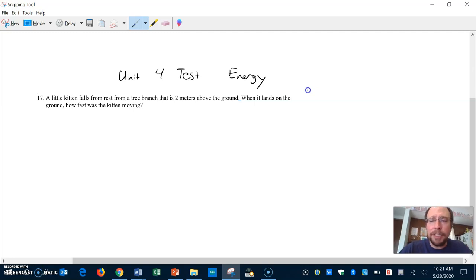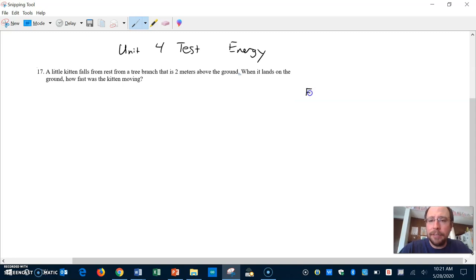A little kitten falls from rest from a tree branch that is two meters above the ground. When it lands on the ground, how fast was the kitten moving? So to solve this one out, we deal with energy because there's different kinds of energy that we keep track of. And so the types of energy that we'll be dealing with are these: there's potential energy and kinetic energy.